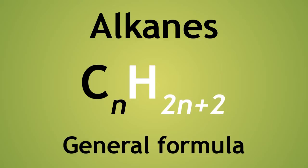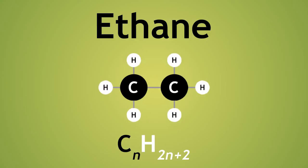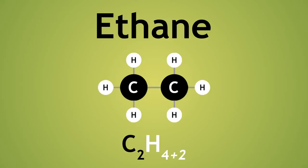A general formula allows us to describe a series of molecules that differ from each other by a constant unit. Let us look again at ethane. Using the formula CnH2n+2, where n represents 2 for the 2 carbon atoms in ethane, we can see that the number of hydrogens will be 2 multiplied by 2 equals 4, plus 2 equals 6. So 6 hydrogens: C2H6.